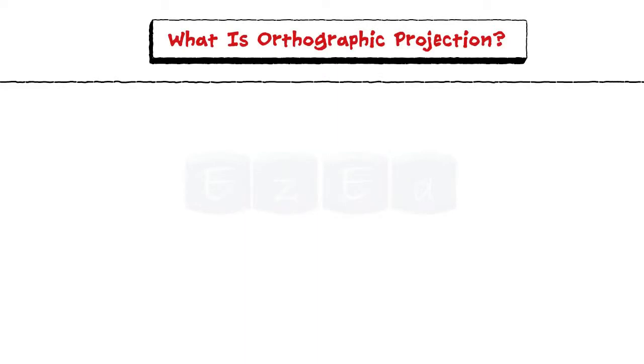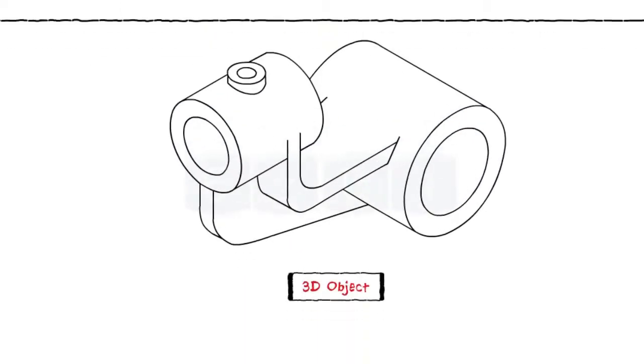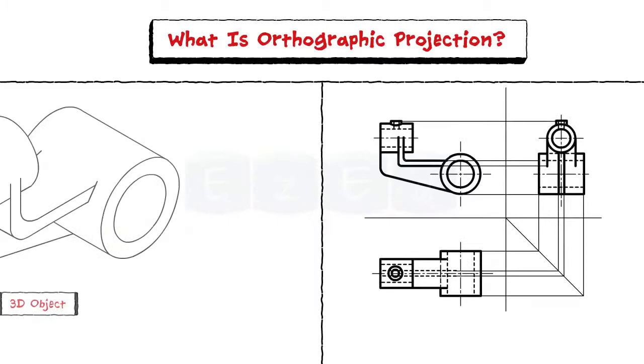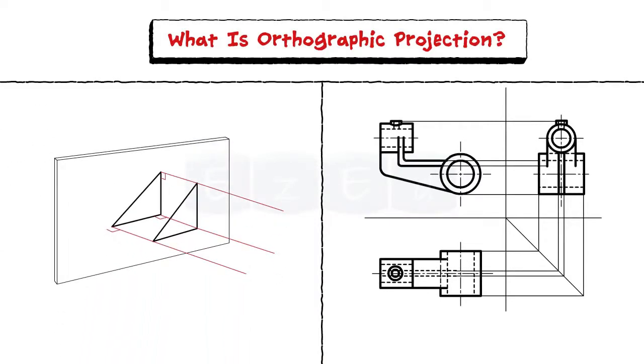An orthographic projection is a method of representing a three-dimensional object in two dimensions. It is a form of parallel projection where all the projection lines are orthogonal to the plane of projection.